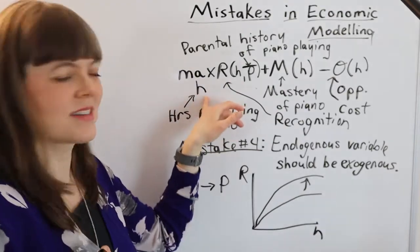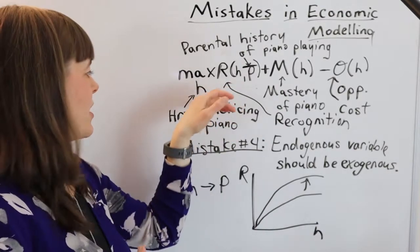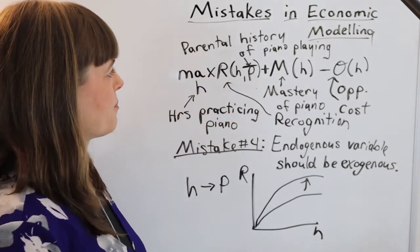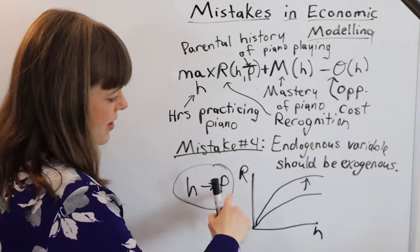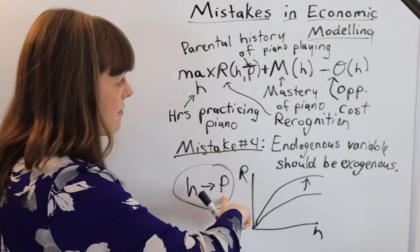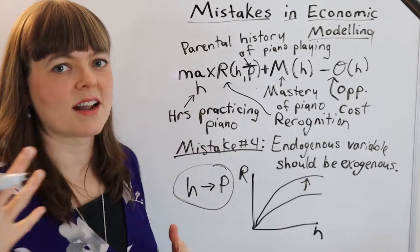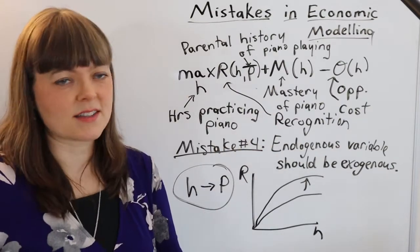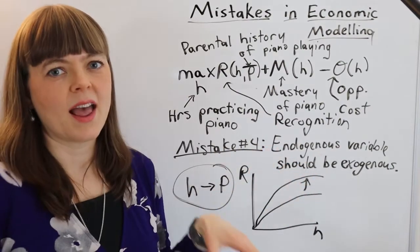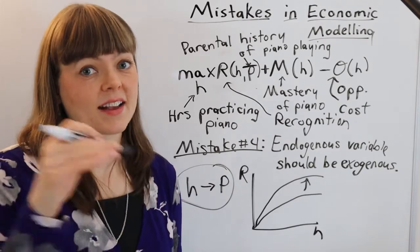And that will, of course, impact the child's decision about how much to practice the piano. So basically, you're going to do this little exercise here where you're thinking about does increasing piano practice influence that supposedly endogenous variable. And if not, the variable should be exogenous. And then you have to just think about how would I build that in as an exogenous variable?